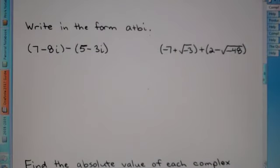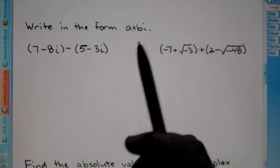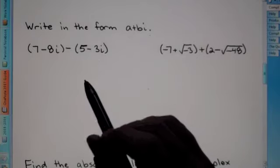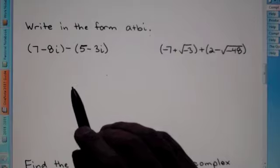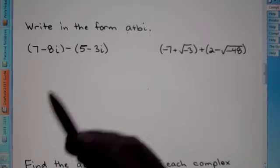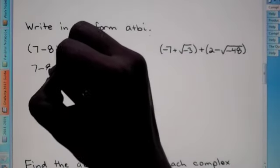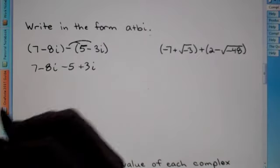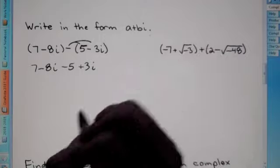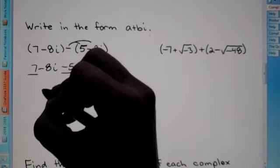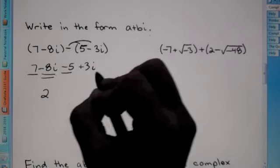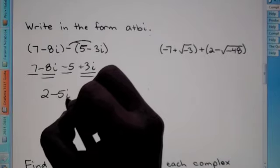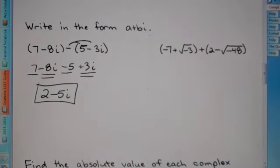This one says write in the form a plus bi. Just like English, math has its own proper notation. When you're dealing with i, you want to have the i terms on the right side of the numbers without i. Here we distribute the negative, so we have 7 minus 8i minus 5 plus 3i, because negative times negative is positive. We combine like terms — numbers without i first: 7 minus 5 is 2. Negative 8i plus 3i is negative 5i. They don't have the same terms, so this is as far as you can go. The final answer is 2 minus 5i.